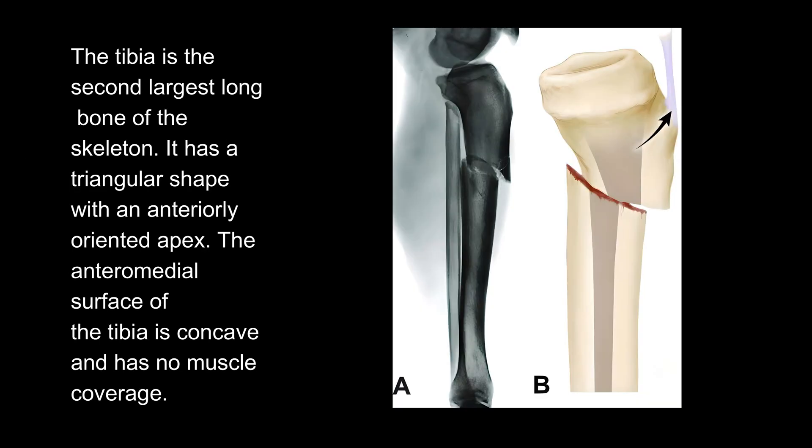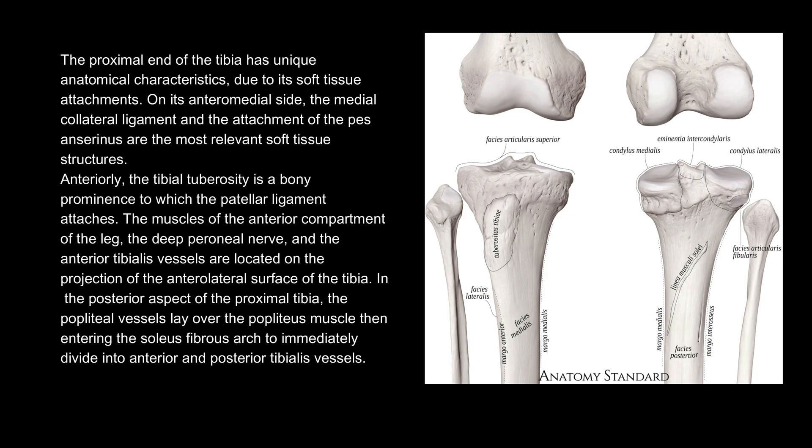The tibia is the second largest long bone of the skeleton. It has a triangular shape with an anteriorly oriented apex. The anteromedial surface of the tibia is concave and has no muscle coverage. The proximal end of the tibia has unique anatomical characteristics due to its soft tissue attachments. On its anteromedial side, the medial collateral ligament and the attachment of the pes anserinus are the most relevant soft tissue structures. Anteriorly, the tibial tuberosity is a bony prominence to which the patellar ligament attaches.